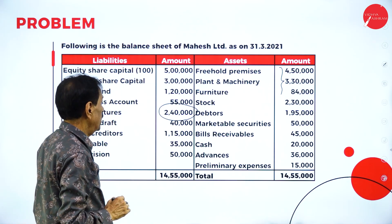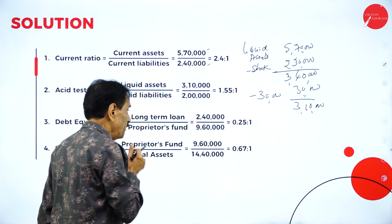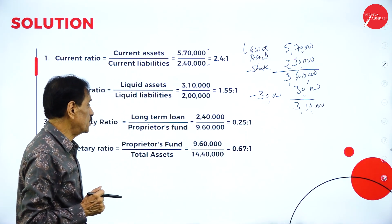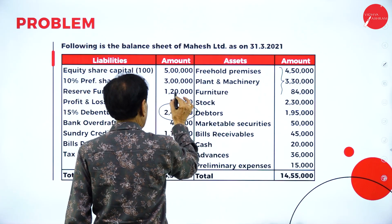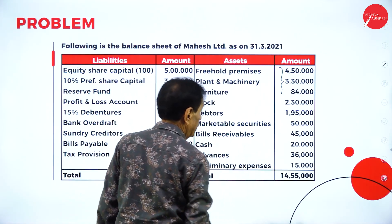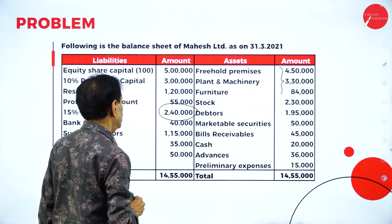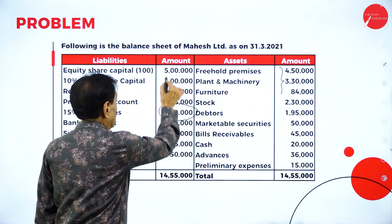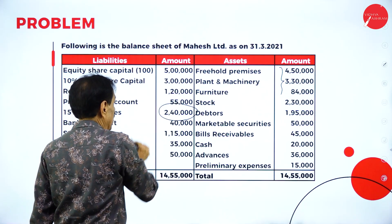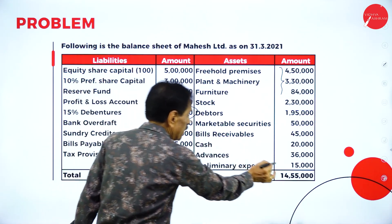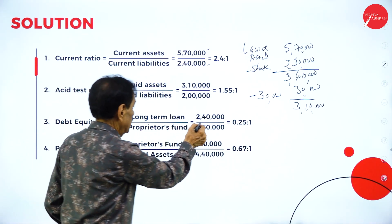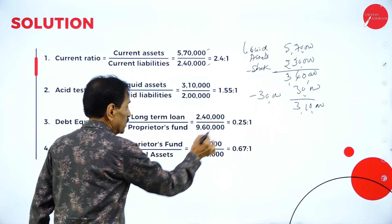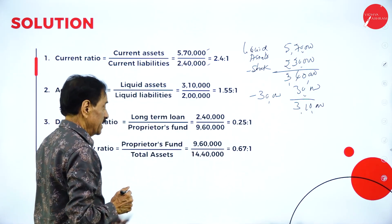The proprietary fund is 5 lakh equity share capital plus 3 lakh preference capital plus 1 lakh 20,000 from reserves and profit and loss account, minus preliminary expenses of 15,000, giving 9 lakh 60,000. Debt equity ratio is 2 lakh 40,000 divided by 9 lakh 60,000, which is 0.25 to 1.